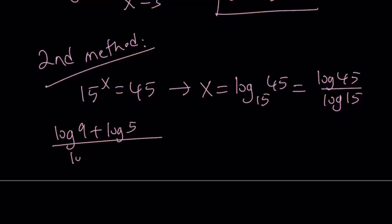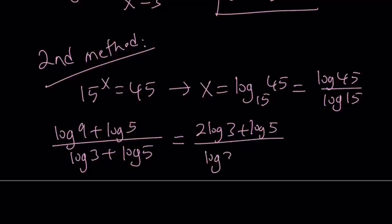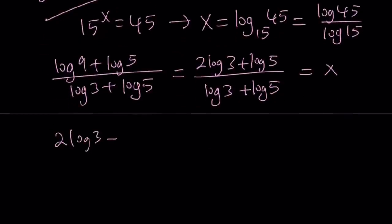And now I can go ahead and break down the 45 into log 9 plus log 5. And then the bottom one can be written as log 3 plus log 5. Anyways 9 can be written as 3 squared. So we can write this as 2 log 3 plus log 5. Again these are in base 10. So log doesn't mean ln here. So now what can I do with this? Well this is equal to x. So let's go ahead and cross multiply. 2 log 3 plus log 5 equals x log 3 plus x log 5.